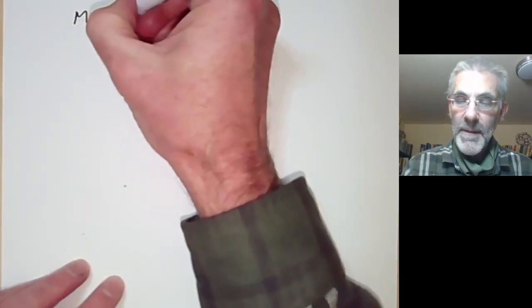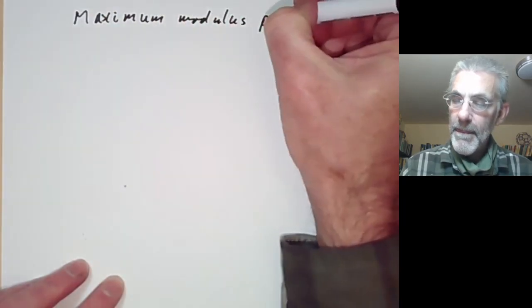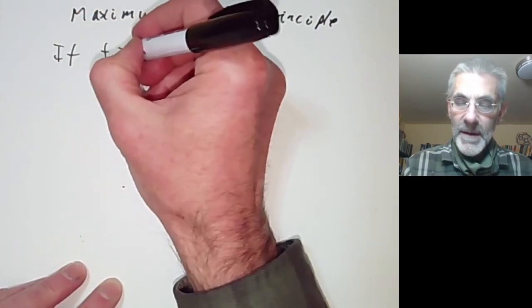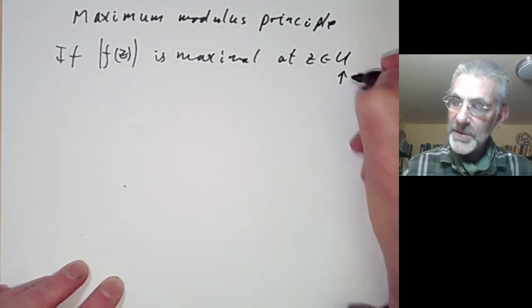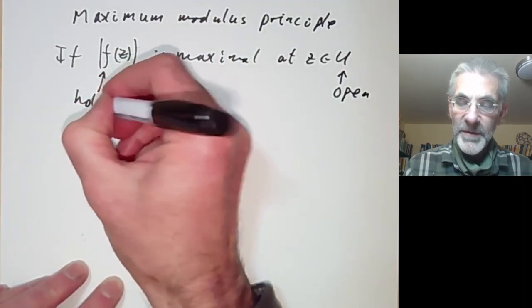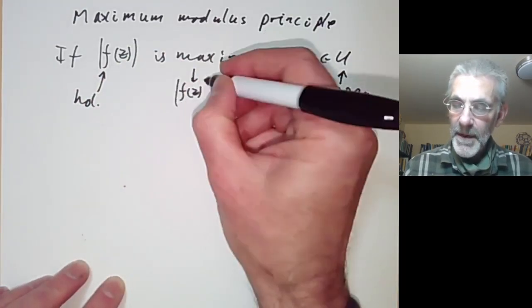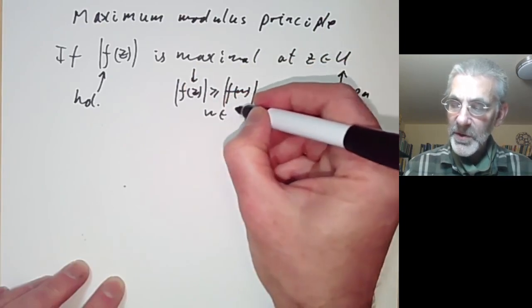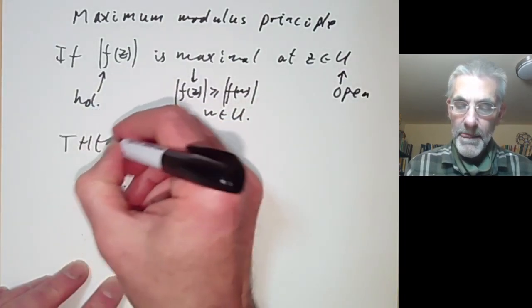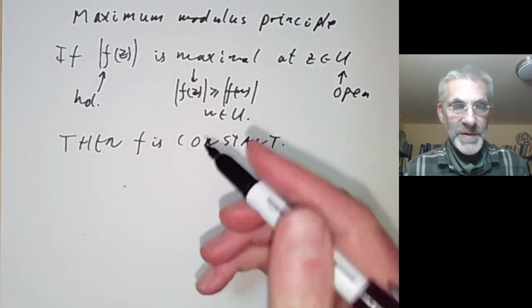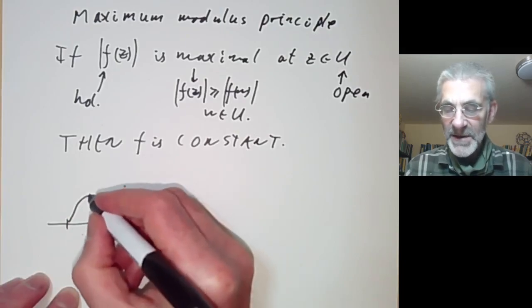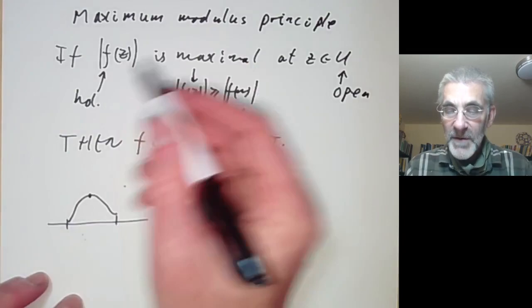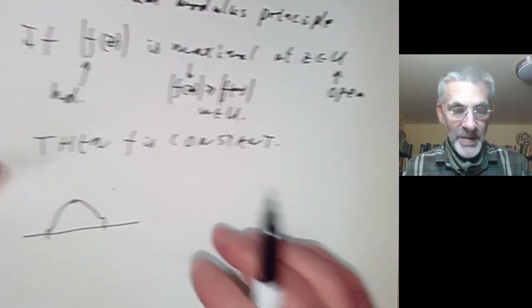This lecture is part of an online course on complex analysis and will be about the maximum modulus principle. This says that if f attains its maximum value at z in u, where u is some open set and f is a holomorphic function, and maximal means that |f(z)| ≥ |f(w)| for w in u, then f is constant. This is surprising compared to real variables, where a function can easily have a maximum in the interior of an open set, but for complex variables this can't happen. The proof is quite easy.